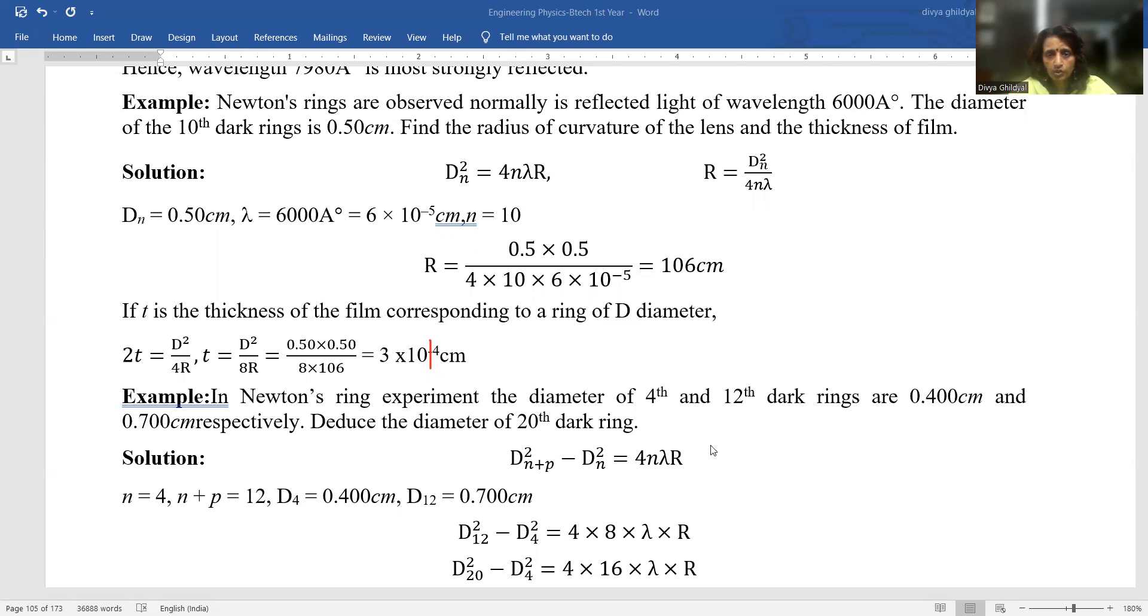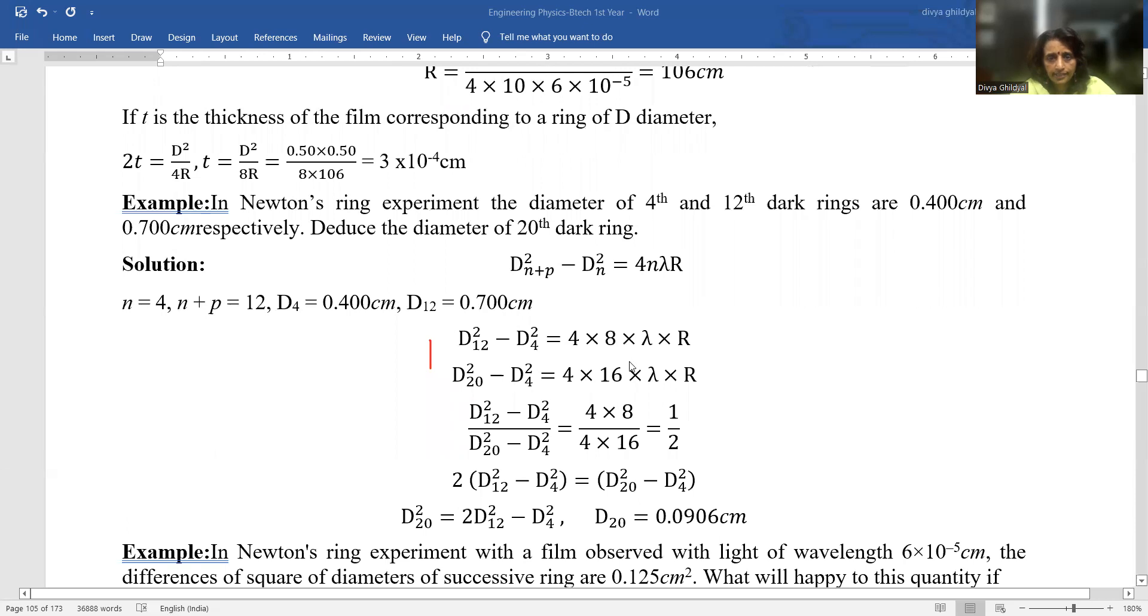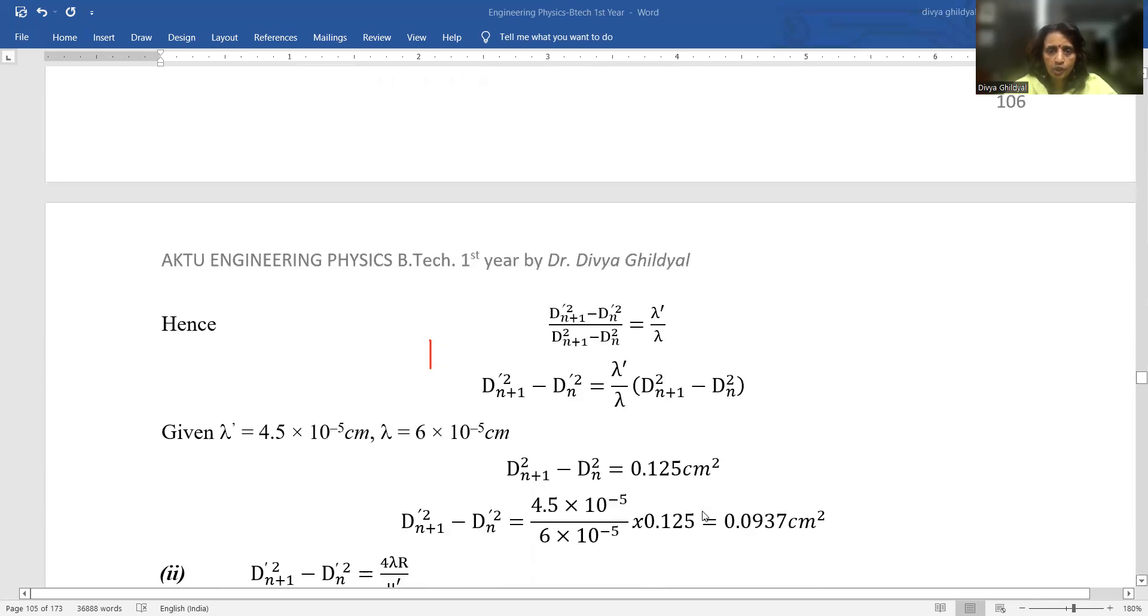Diameter of the 4th dark ring has been given as 0.4, 12th has been given as 0.7. We square and subtract them and put the value here in this formula and we get the answer. So, a quick recap of interference.